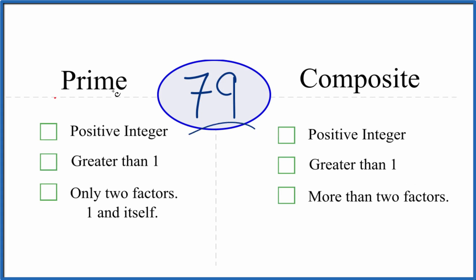So is 79 a prime or a composite number? Here's how you tell. Let's see if 79 is a prime number first. We ask ourselves if it's a positive integer. Yeah, it's a positive integer greater than 1.